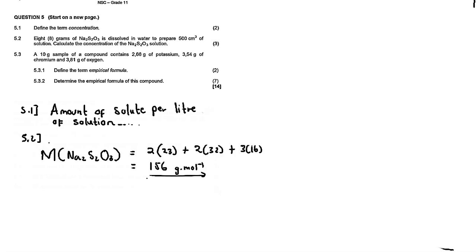The first thing we need to find is the molar mass of Na₂S₂O₃. The molar mass is: two times the molar mass of sodium, plus two times the molar mass of sulfur, plus three times the molar mass of oxygen. The formula for calculating concentration is C equals number of moles divided by volume, and concentration is measured in moles per cubic decimetre.